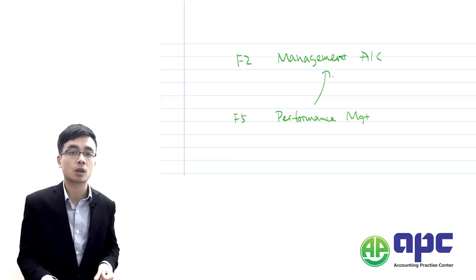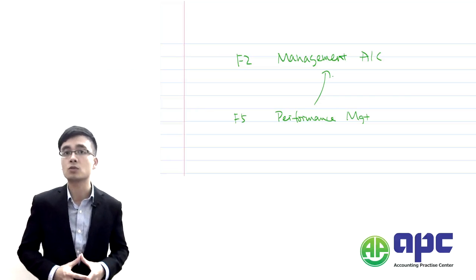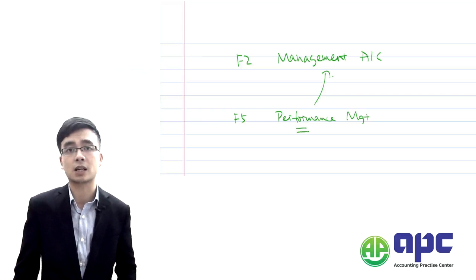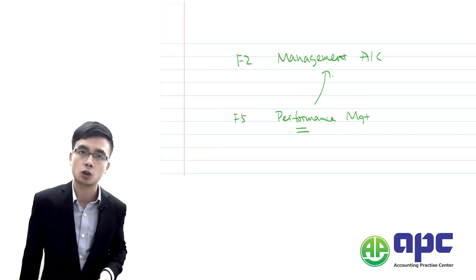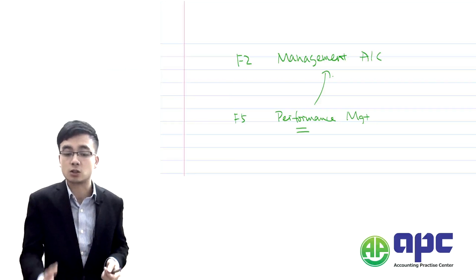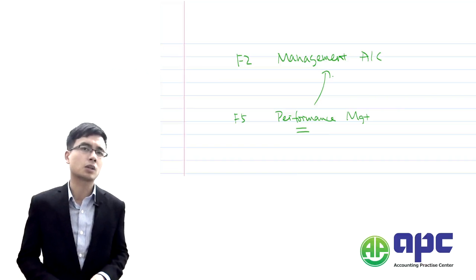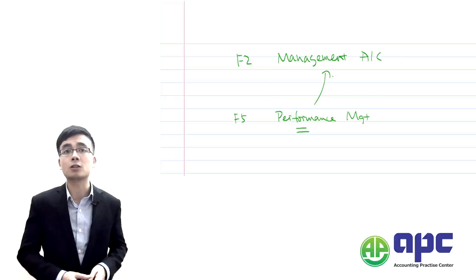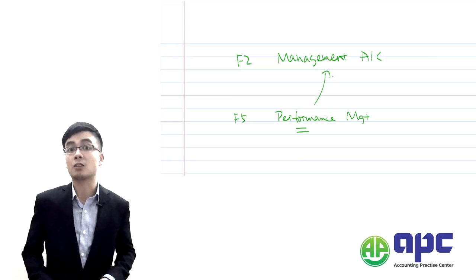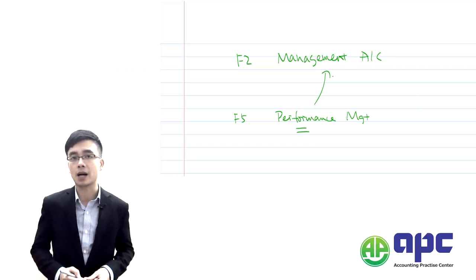In ACCA paper F5 we extend this idea to manage the performance of the organisation. We think about how to conduct management activities smoothly — for example, how to determine costs for different products using different costing techniques. In F5 we focus mainly on decision making, such as marginal costing based decision-making, and how to manage performance using tools like the balanced scorecard, rather than just recording costing information as in F2.